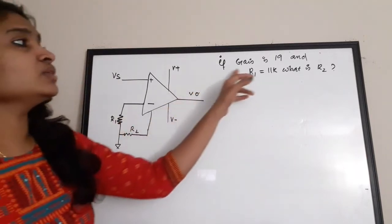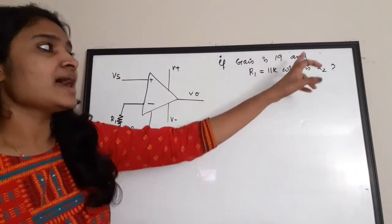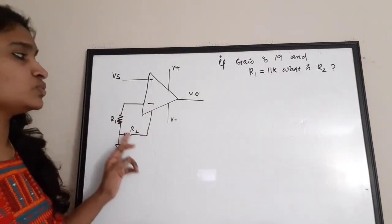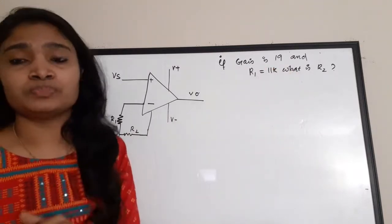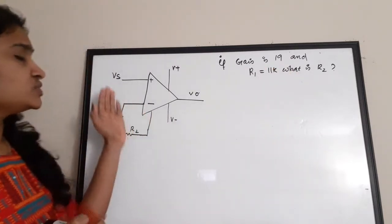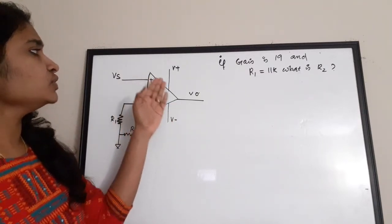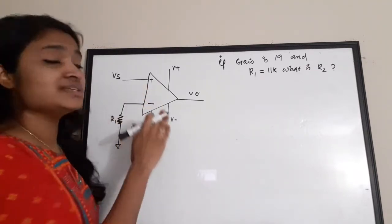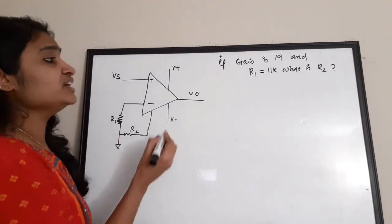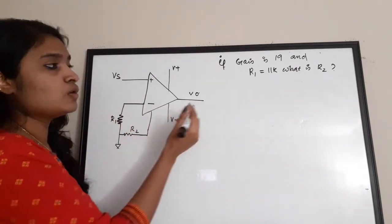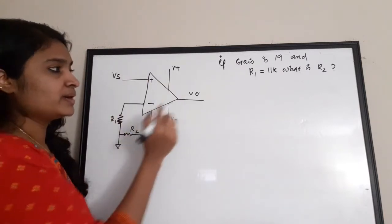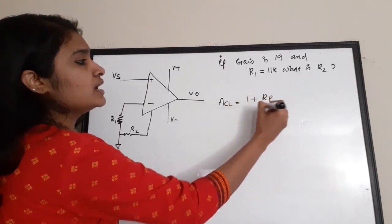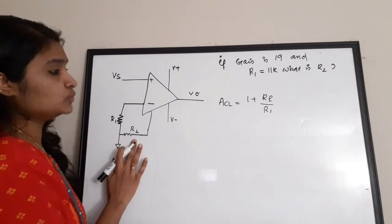The first question: the gain of this circuit is 19, and there are two resistors R1 and R2. R1 value is 11kΩ — what is the value of R2? If you closely observe this circuit, it is a non-inverting operational amplifier because the input is connected to the non-inverting terminal. The closed-loop gain equation for a non-inverting op-amp is: ACL = 1 + Rf/Ri.